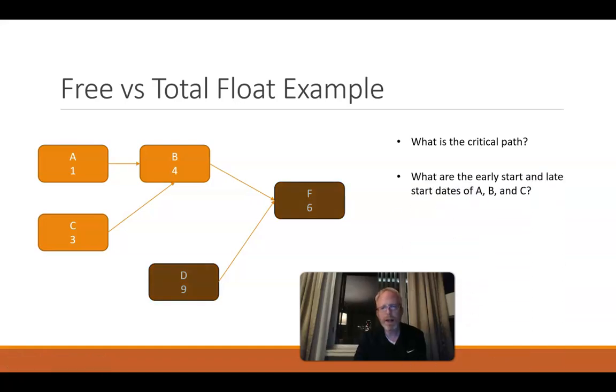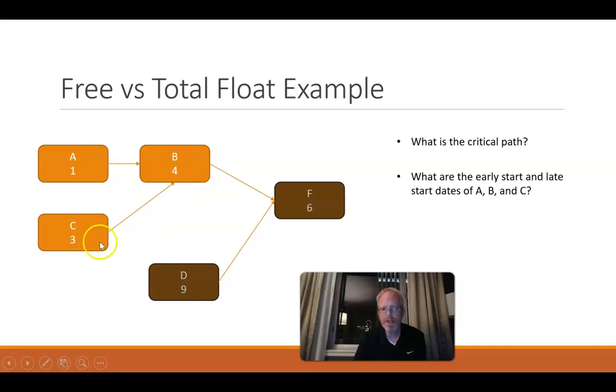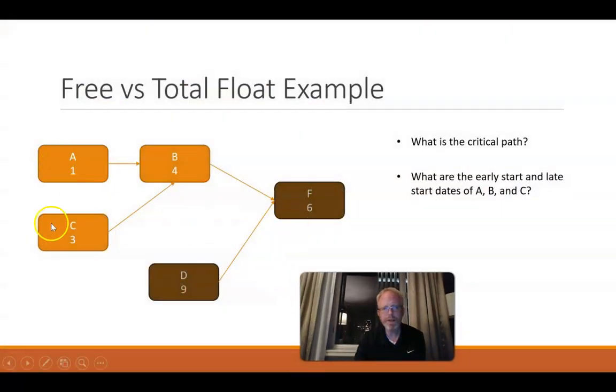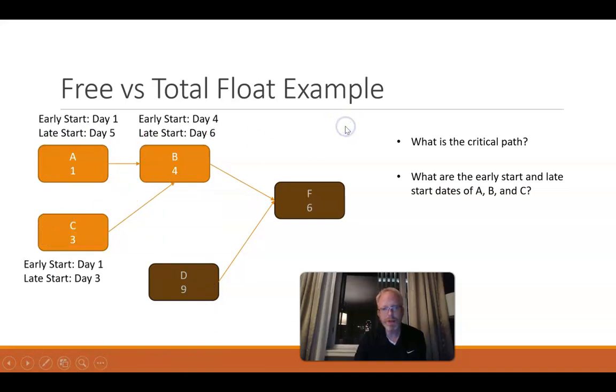Now, what are the early start dates of A, B, and C? A and C are straightforward — we could start either of those on day one. Task B is a little more tricky because B can't start until task C is finished. We consider working days to be full days, starting from the morning of day one. So a task that takes three days runs from day one to the end of day three, and the next task starts at the beginning of day four. Given that, early start for A and C are both day one, and early start for B is day four.